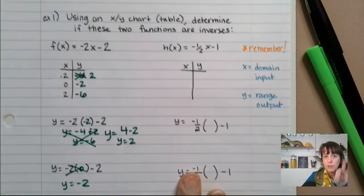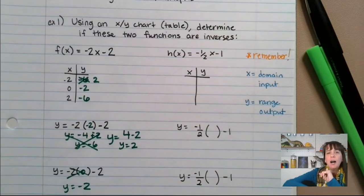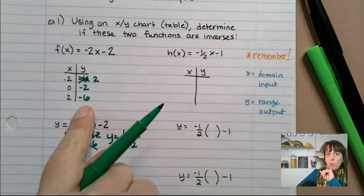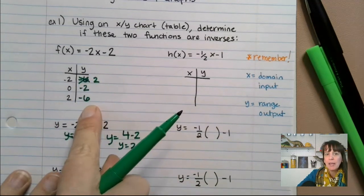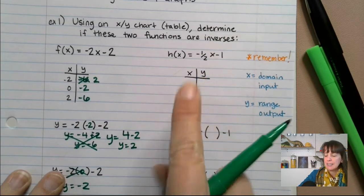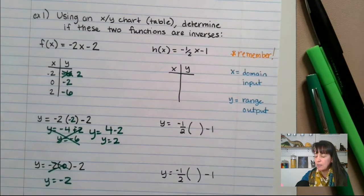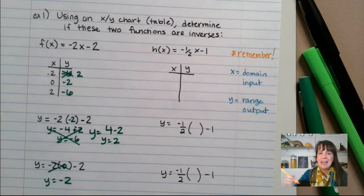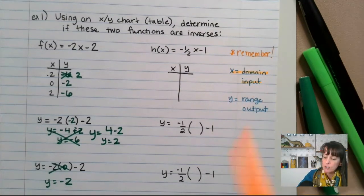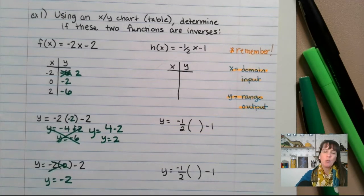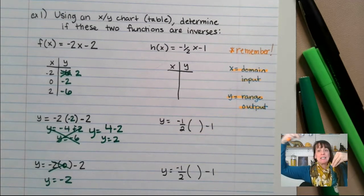So what you do now, we have these two functions and I want to know if they are inverses. You find, you do an x, y chart for the one and you take your y and you're going to insert it for your x. Friendly reminder, if you have not already written this down a dozen times in your notebooks, write it down again. You need to remember that x means domain, which also means your input. Your y means your range, which is also your output.